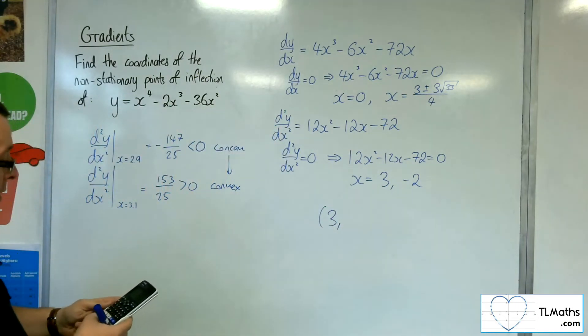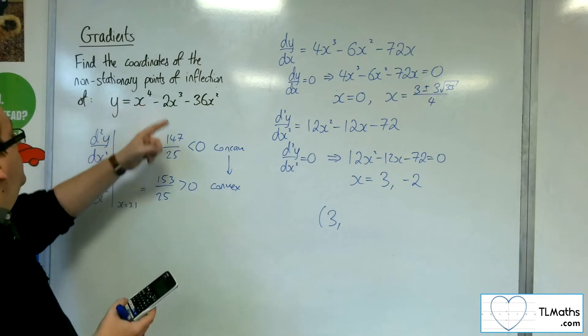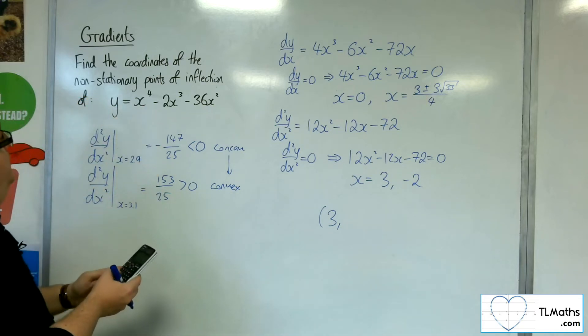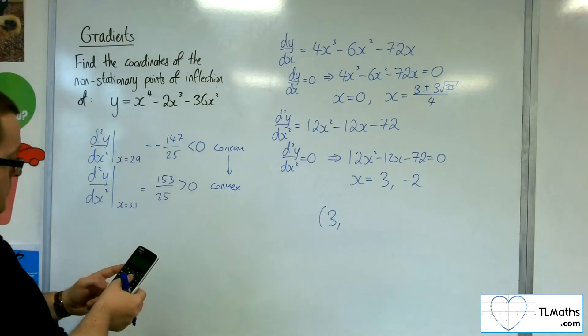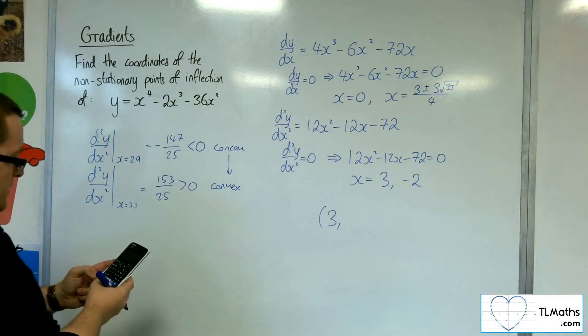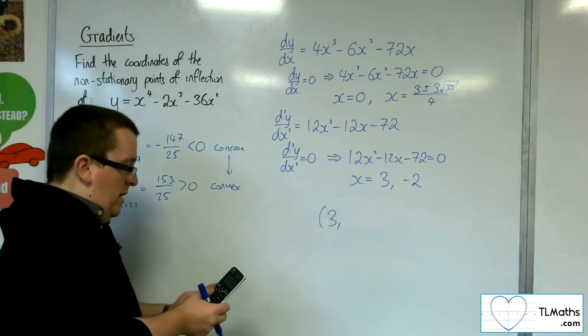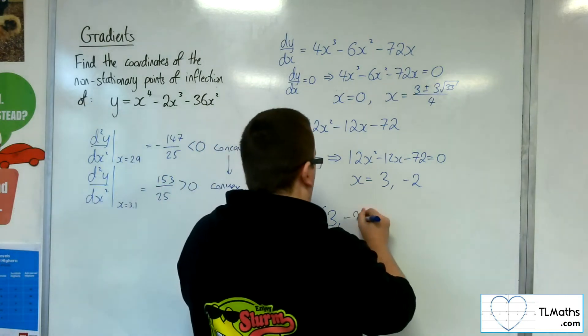So substituting 3 into the y gets me the y-coordinate. Sorry, we've got 3 to the 4, take away 2 lots of 3 cubed, take away 36 lots of 3 squared. So that's minus 297.